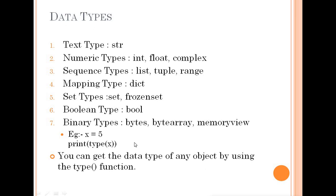In Python, you don't have to declare the type like in other languages where you would write int x equals 5. In Python, there is no need to declare which type of data it is. Python automatically determines the data type when you assign a value.